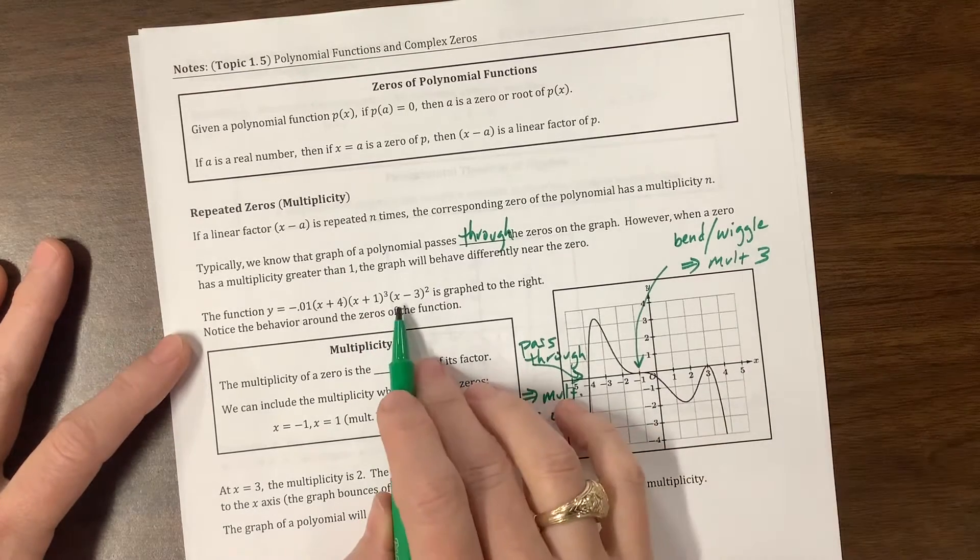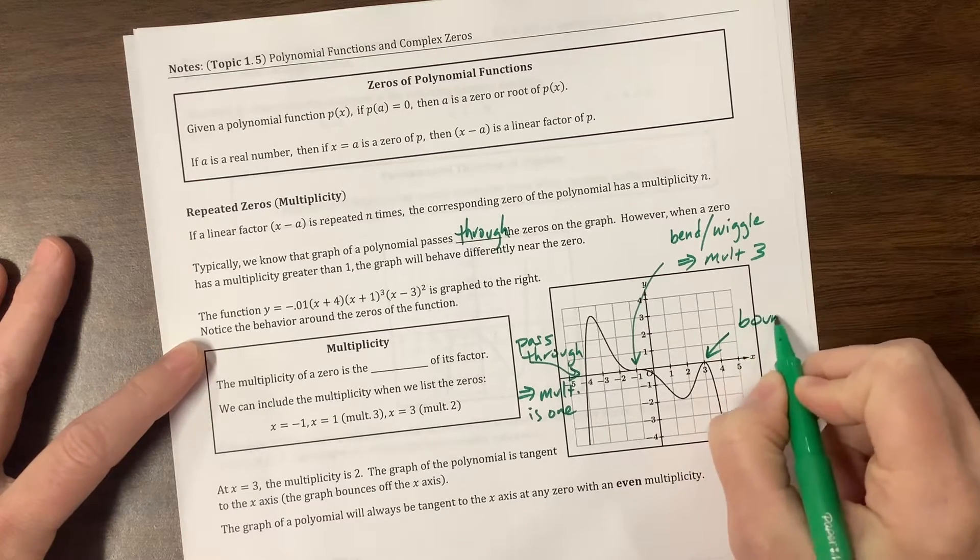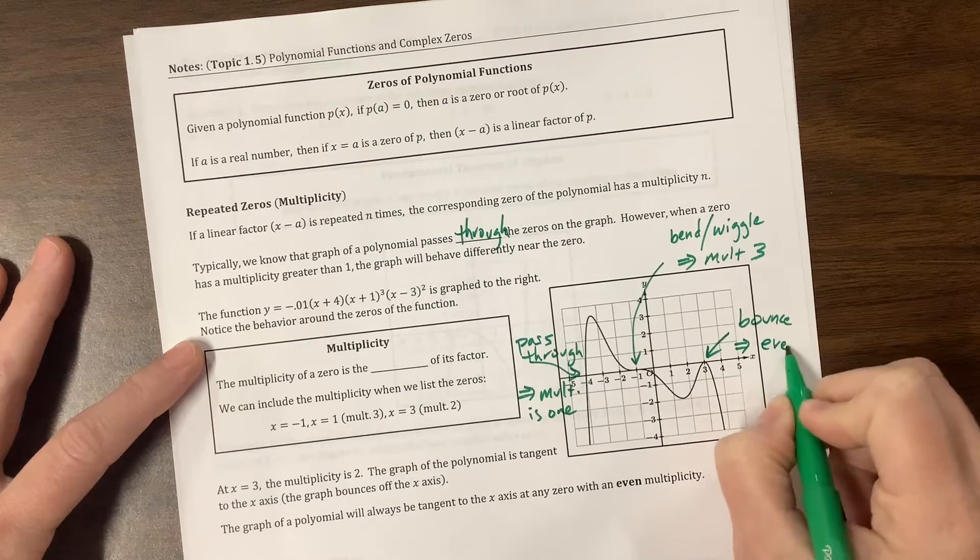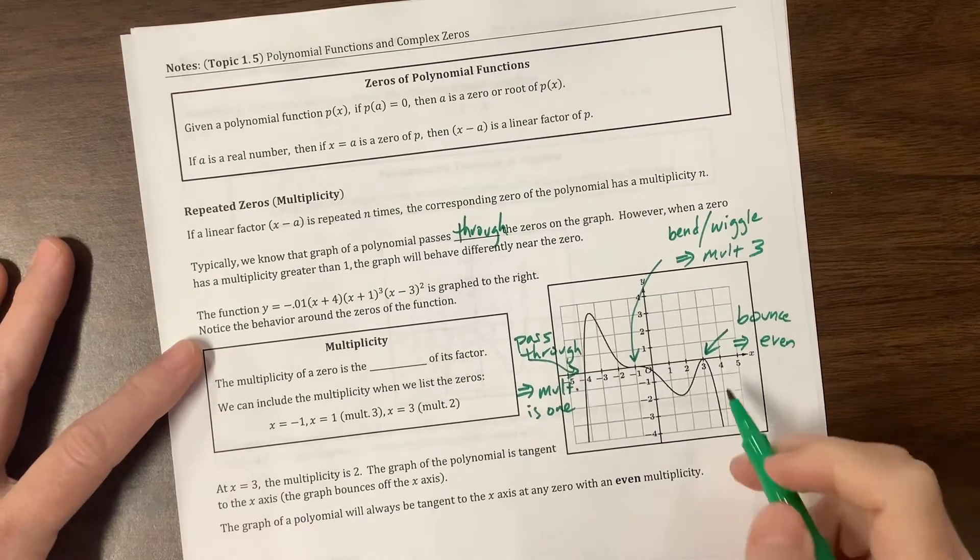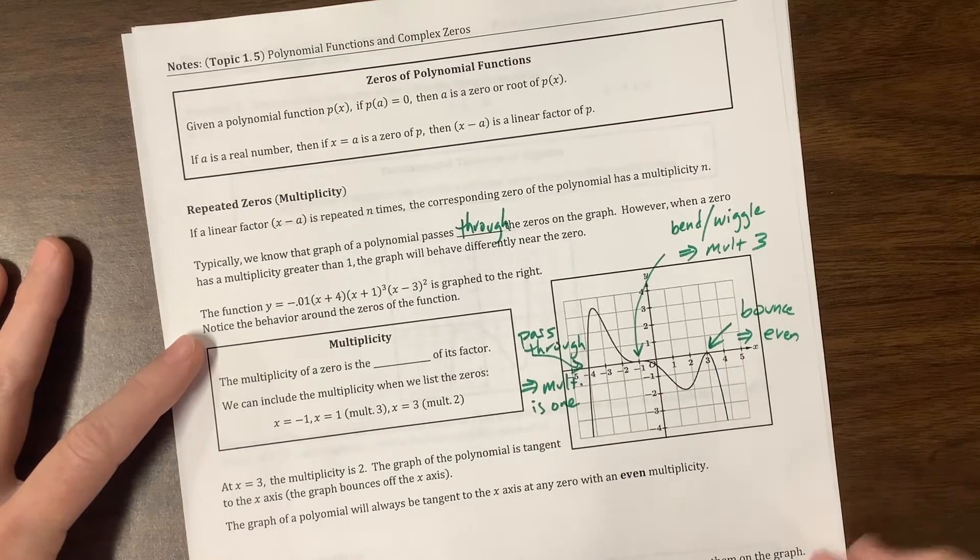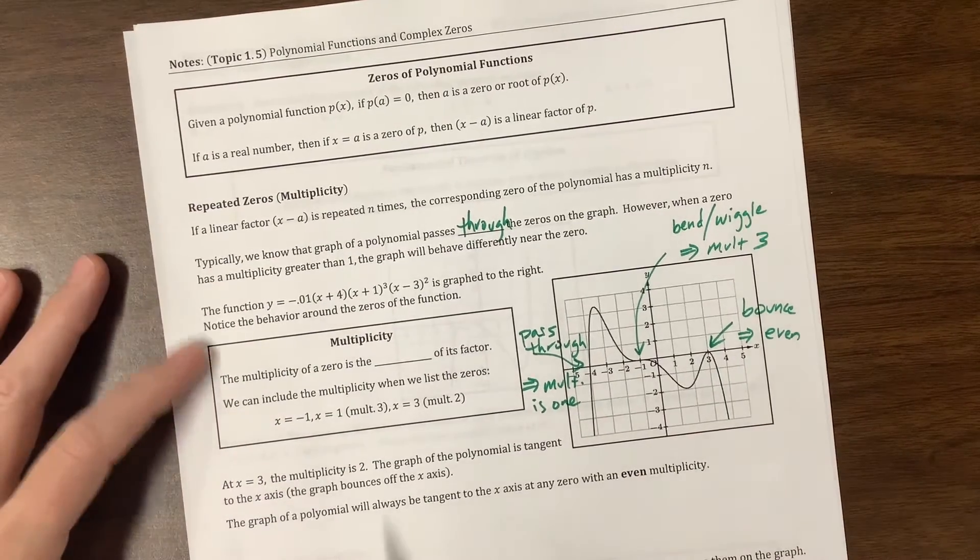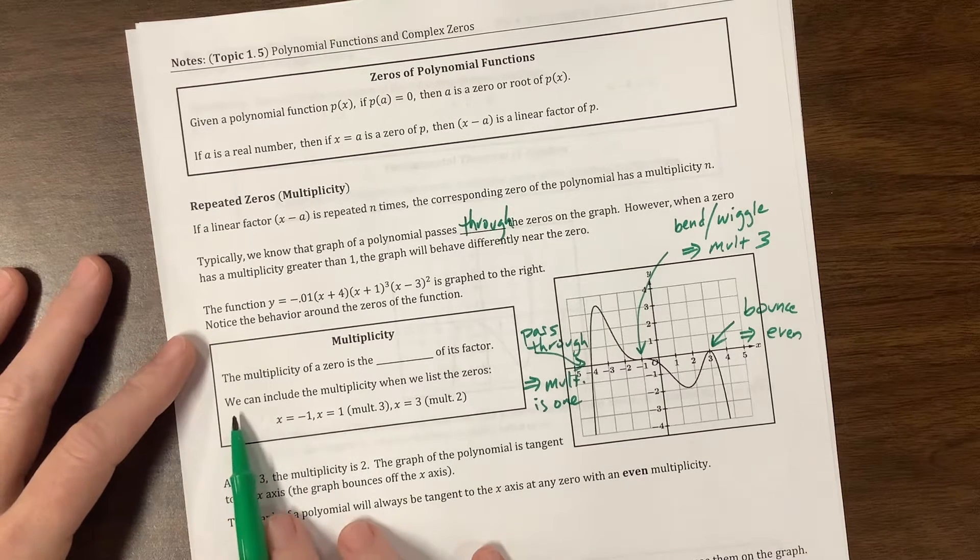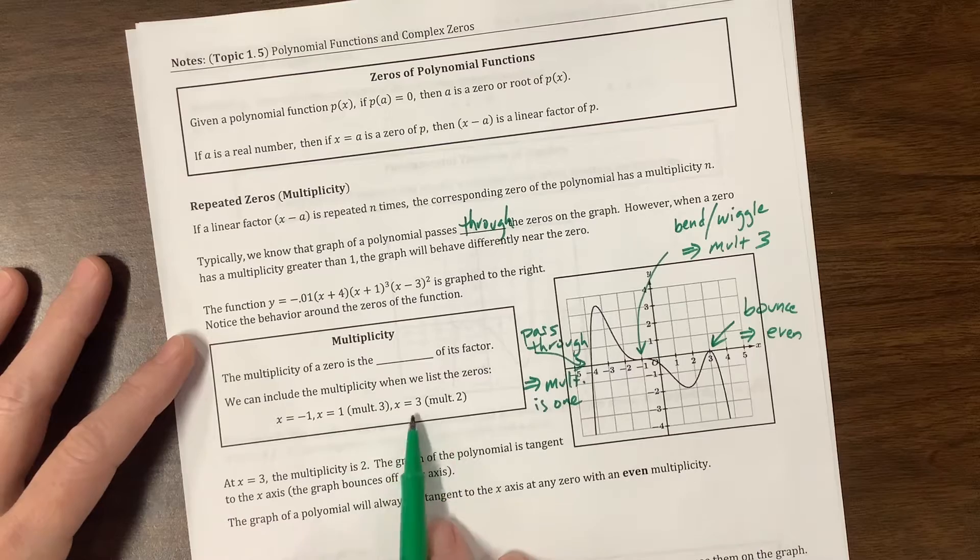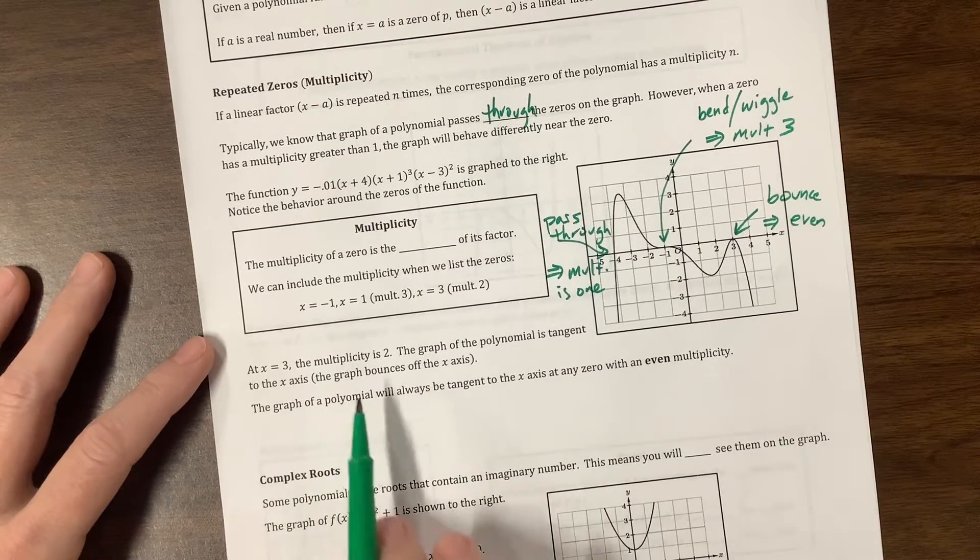The next part was this x minus 3 squared. This right here, this is a bounce, is how I refer to that. The bounce implies that it's an even multiplicity. In this case, it was 2. We would assume 2, unless they give us information to extend it to 4 or 6 or whatever. And then we would write it out as x equals negative 4, x equals negative 1 with a multiplicity of 3, x equals 3 with a multiplicity of 2.